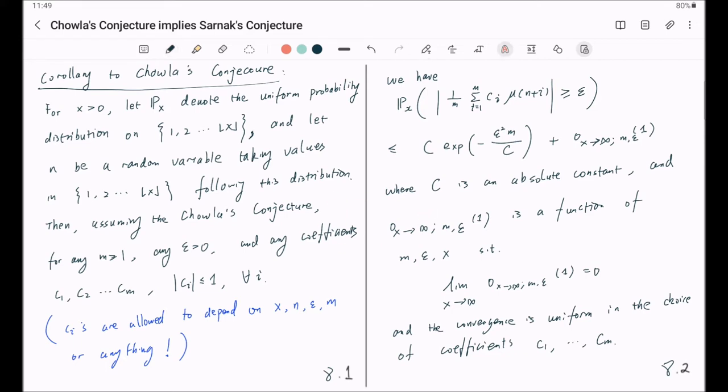So, this is the full statement of this corollary to Chowla's conjecture. It basically provides a concentration inequality. It provides a realization of the pseudo-randomness of Möbius function in terms of a concentration inequality in probability.